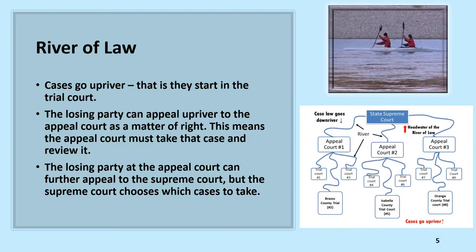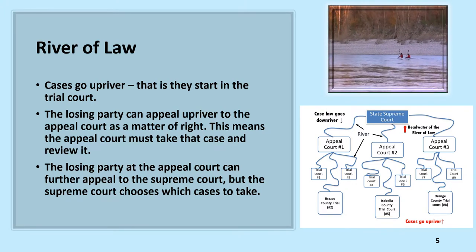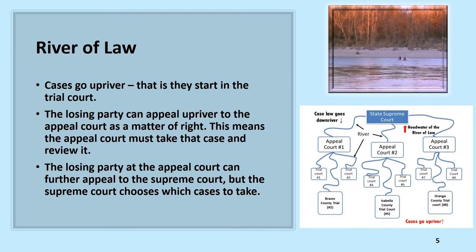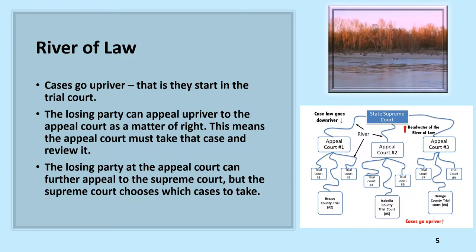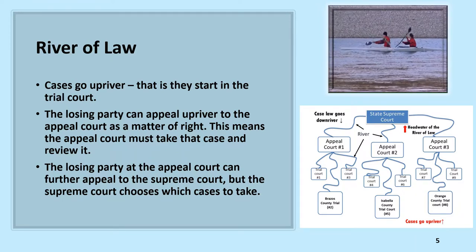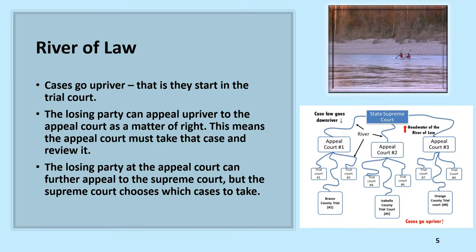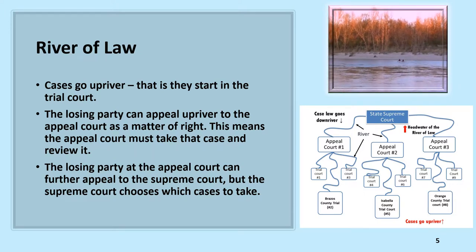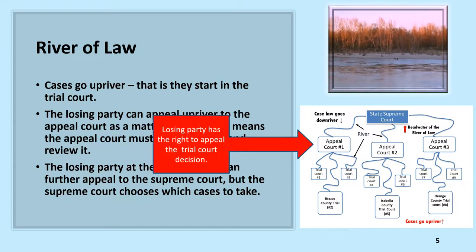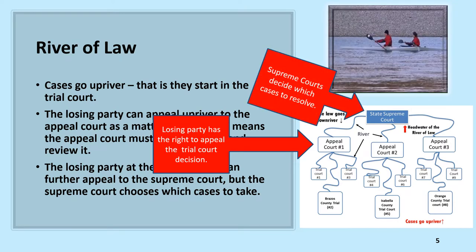Cases go up river — that is, they start in the trial court. The losing party can appeal up river to the appeal court as a matter of right, which means the appeal court must take that case and review it. The losing party at the appeal court can further appeal to the Supreme Court, but the Supreme Court chooses which cases to take.